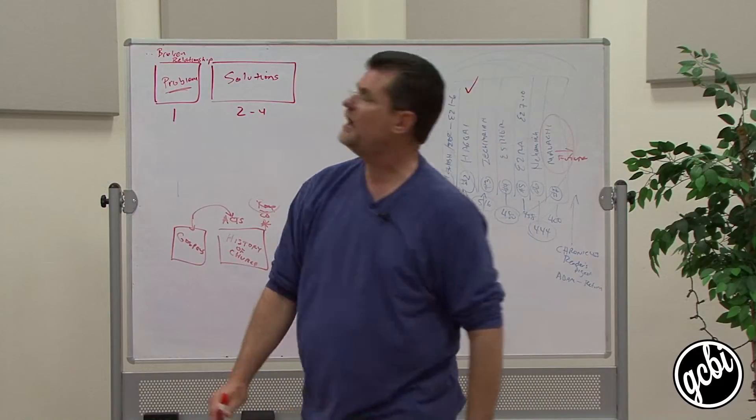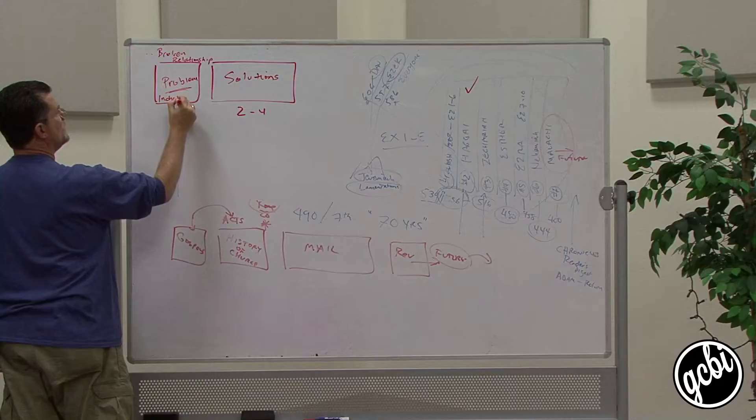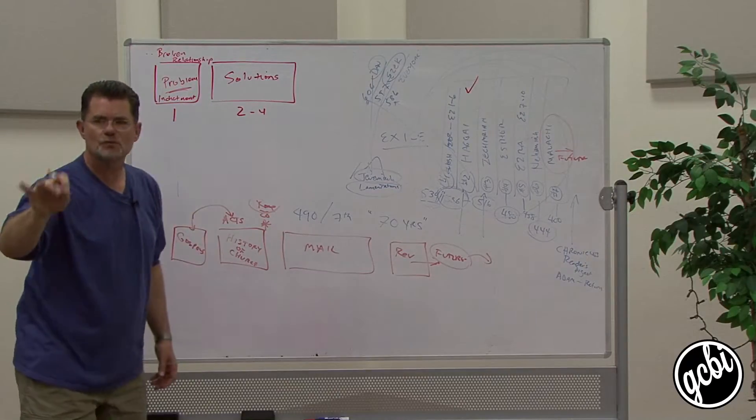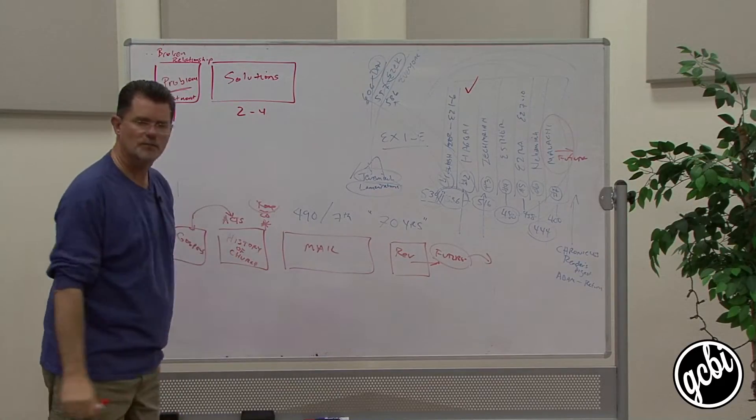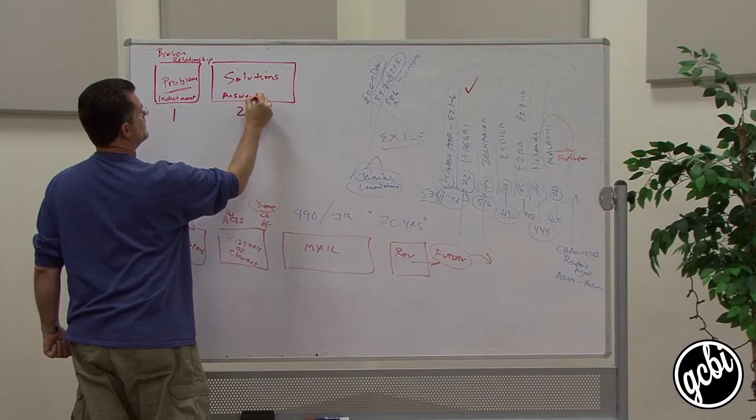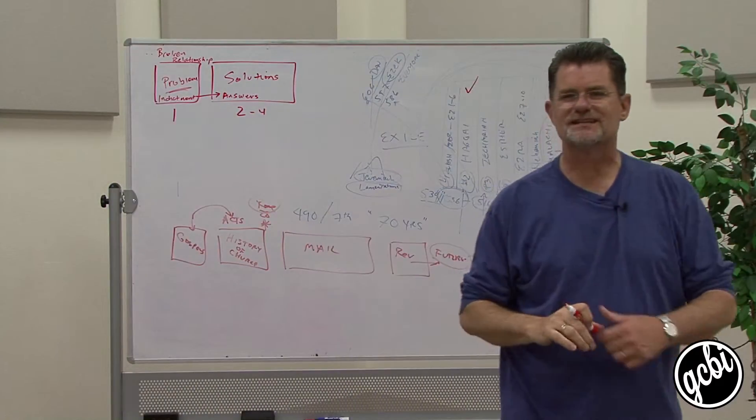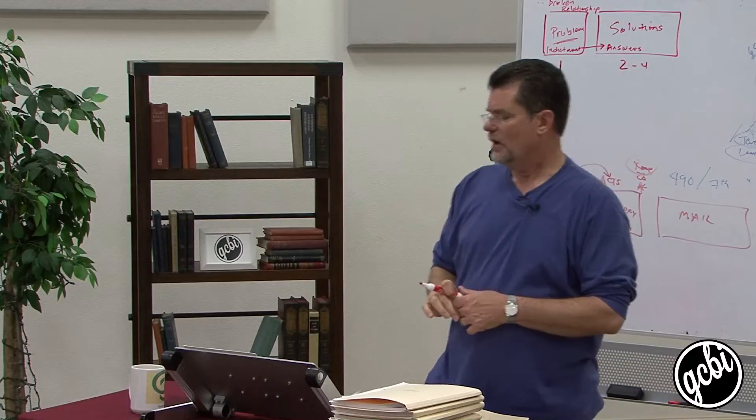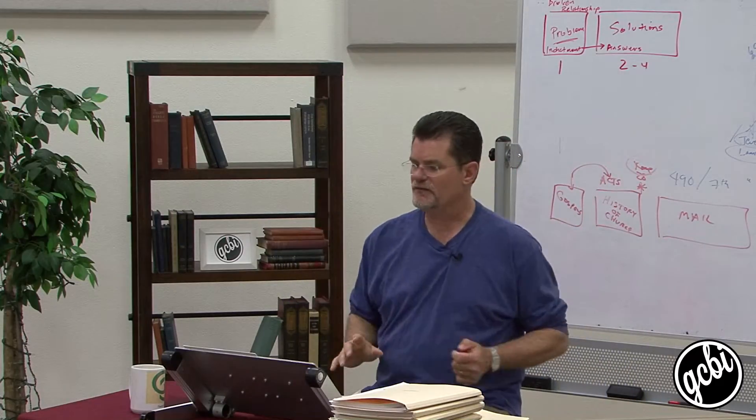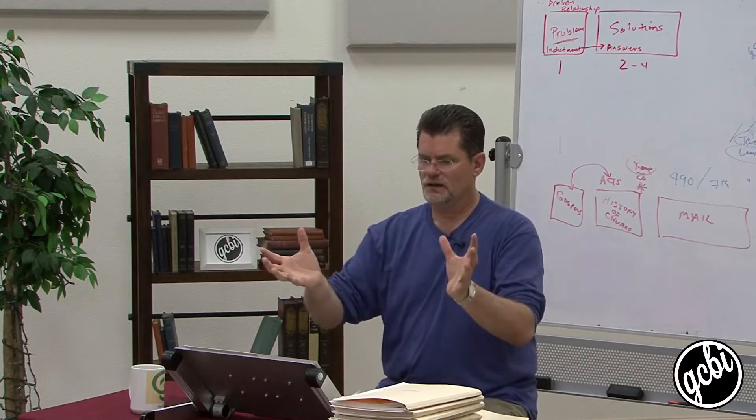This is going to be indictments. An indictment is when God says, here's what's wrong, here's the problem. And then God will give answers. Those indictments lead to the Lord saying some specific things. Let's see if we can take a look at the main problem that they have. When you come into chapter one, I want you to see there are two priority problems.